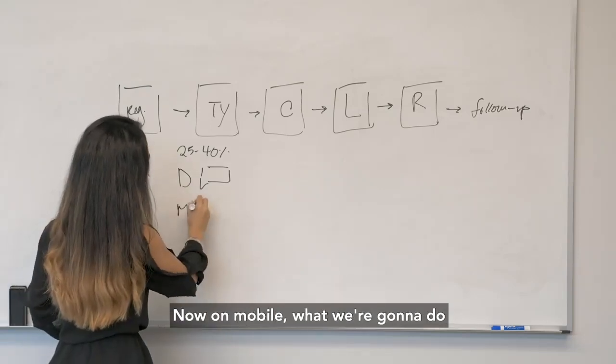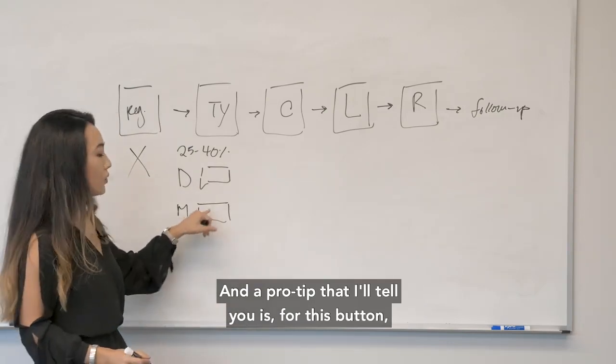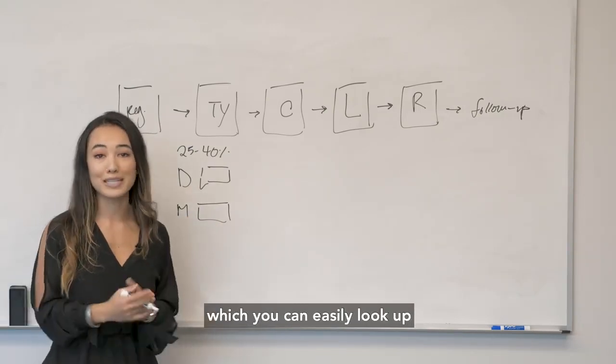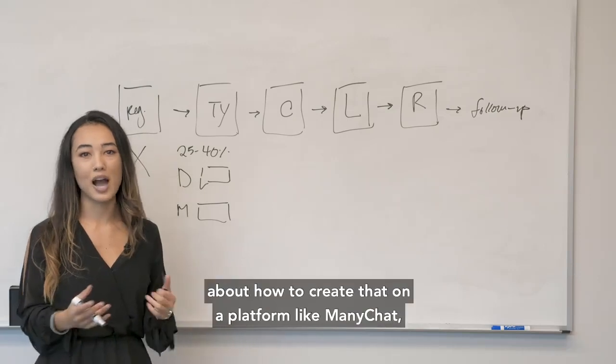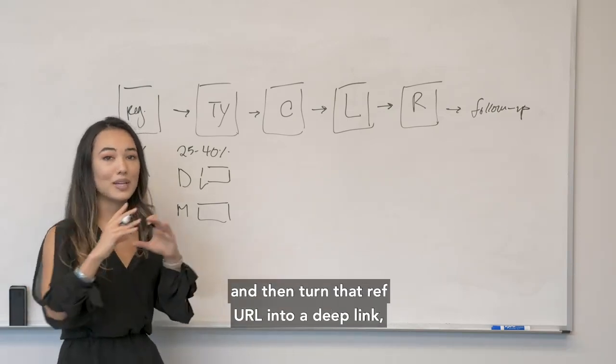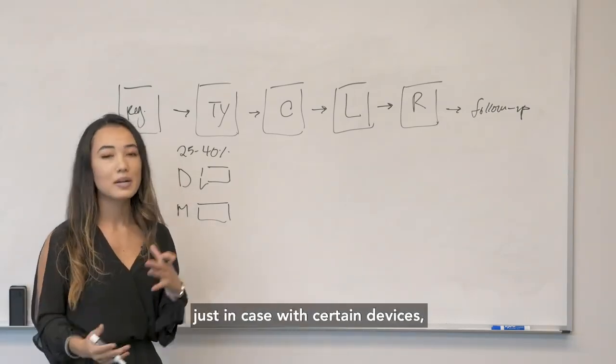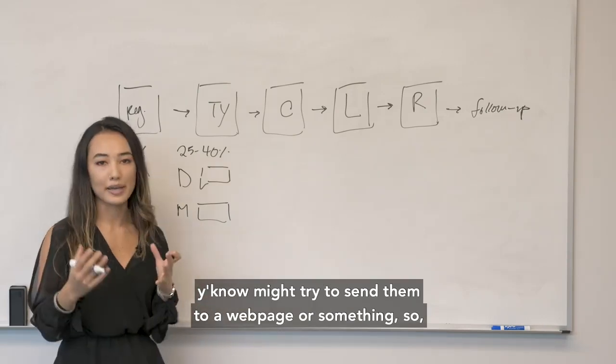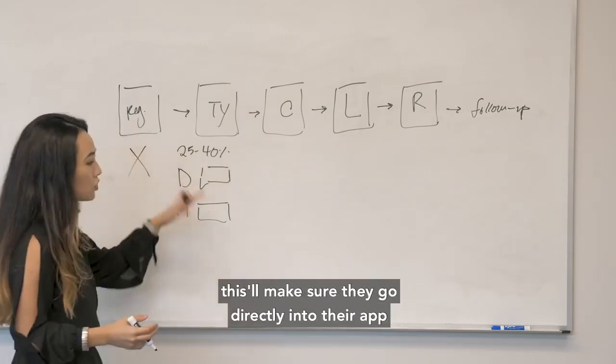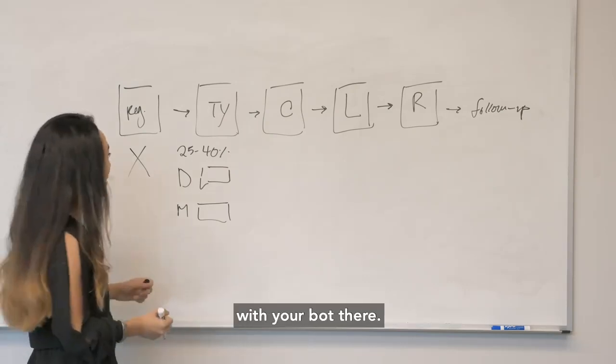Now on mobile, what we're going to do is actually add a button instead. And a pro tip that I'll tell you is for this button, you actually want to send people to a ref URL, which you can easily look up and just find a little more information about how to create that on a platform like ManyChat. And then turn that ref URL into a deep link, which is going to directly send people to their Facebook Messenger app, just in case with certain devices it might try to send them to a web page or something. So this will make sure they go directly into their app and start the experience and conversation with your bot there.